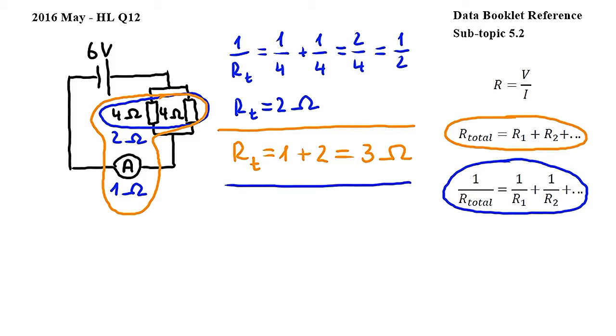Now we can find the current in the ammeter, in other words the reading of the ammeter, by using this equation also from subtopic 5.2, where R is resistance, V is potential difference, and I is current.